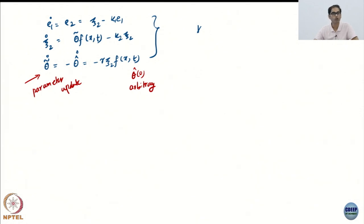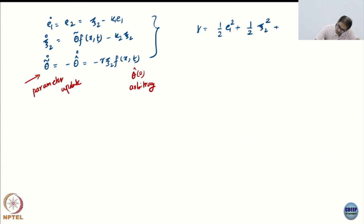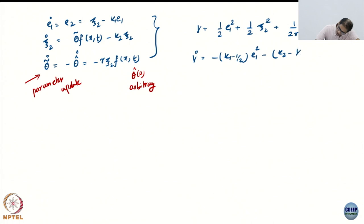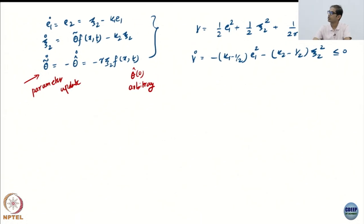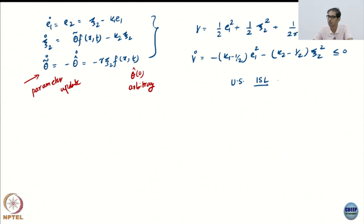Now let us see what happens to the tracking objective. The V was: half e1-squared plus half psi2-squared plus 1/(2 gamma) times theta-tilde-squared. And V-dot was: minus (k1 minus half) e1-squared minus (k2 minus half) psi2-squared. The first one is positive definite; the second one is only negative semi-definite. So you have uniform stability in the sense of Lyapunov. Now we want to do signal chasing because we have a negative semi-definite V-dot — we are exactly in the domain of Barbalat's lemma.